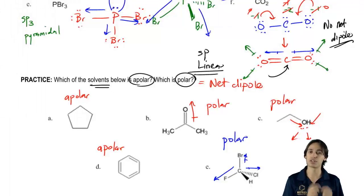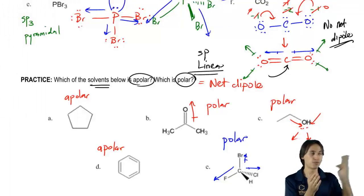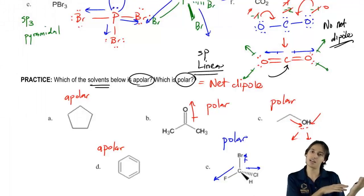...is that they don't figure out what the shape of the molecule is first before solving it. So you always have to figure out what's the shape, what's the hybridization, what is the geometry, and then from there you can answer, okay, is this overall polar or is this apolar? Does it have a net dipole or does it not have a net dipole?